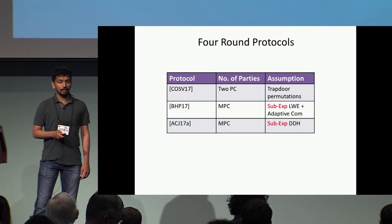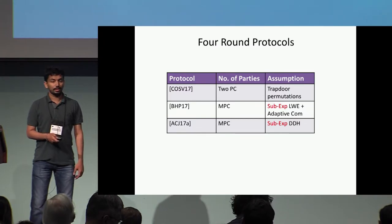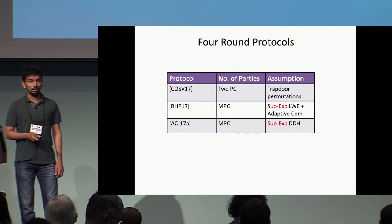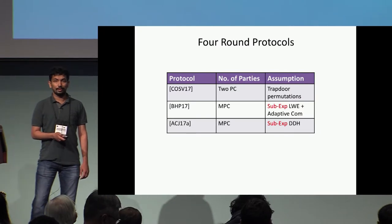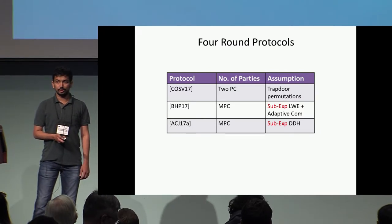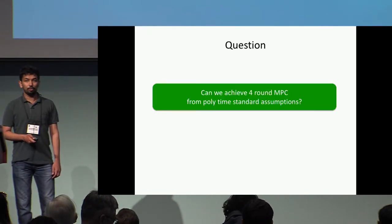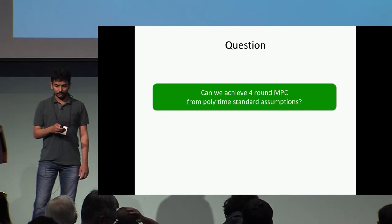This brings us to the work on four-round protocols. Last year, Siampi et al. showed how to build two-party computation in four rounds. Then two concurrent works of Brackersky et al. and Anant et al. showed how to build four-round MPC protocols from sub-exponential time assumptions. The question we focus on is: can we build four-round MPC from standard polynomial-time assumptions, without relying on sub-exponential hardness?